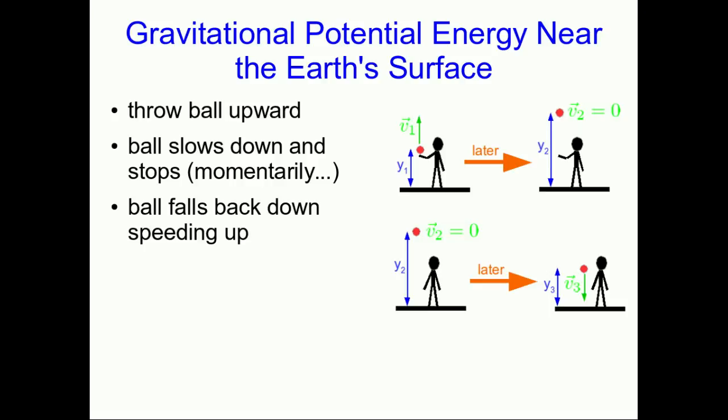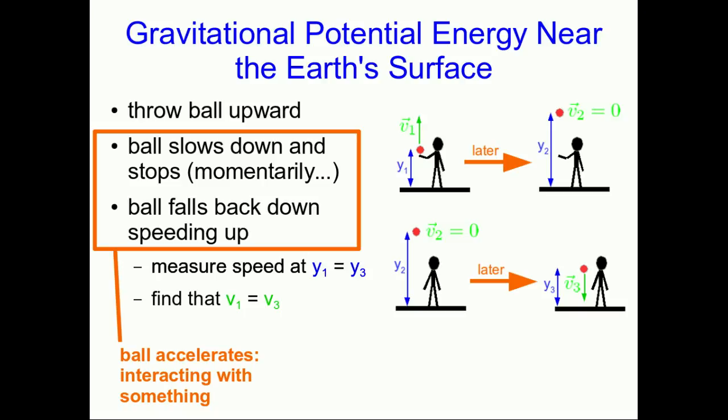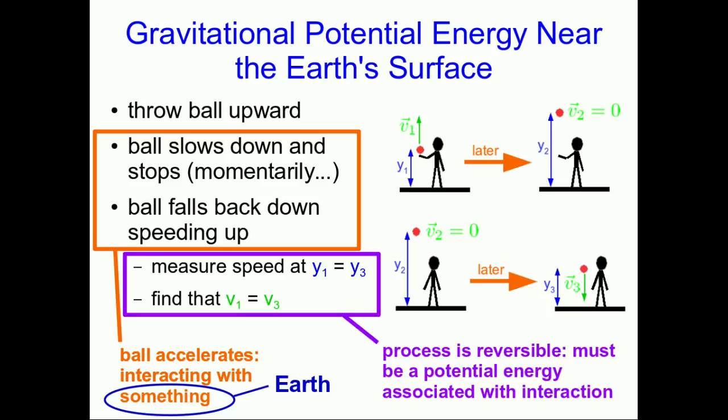Of course, it slows down, momentarily stops, and then falls back down, speeding up. And in particular, you already know and can verify experimentally that at two places in its path, where it's at the same height, it has to have the same speed. So let's look at the consequences of this, and it's going to be a lot like the cart hitting the spring. The ball is accelerating, so it must be interacting with something. You can do experiments in vacuum, and this all happens the same way, so it's not interacting with the air. In fact, it's not touching anything, so this must be a long-range interaction. And it works the same way everywhere on Earth, so clearly the thing it's interacting with is the Earth.